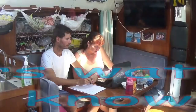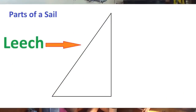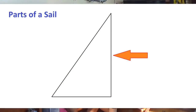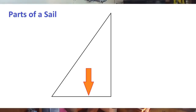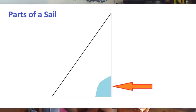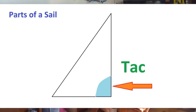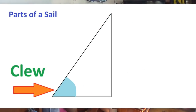This is your test. What is the name of this edge? Leech. What is the name of this edge? Luff. The name of this edge? Foot. The name of this corner? Head. The name of this corner? Deck. The name of this corner? Clue.